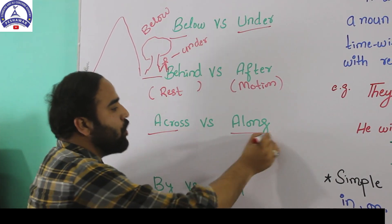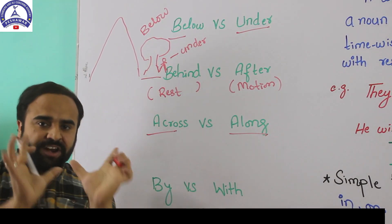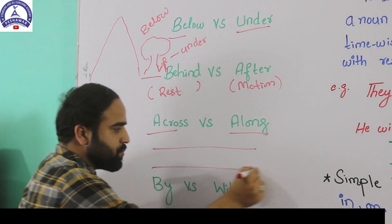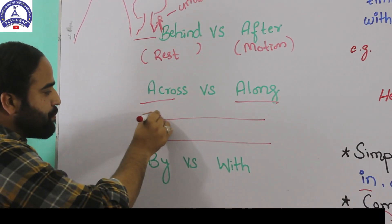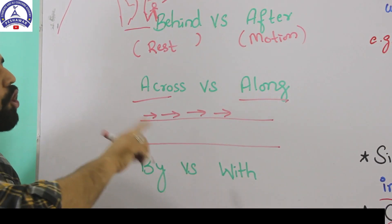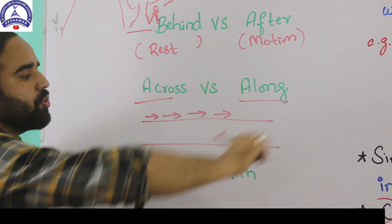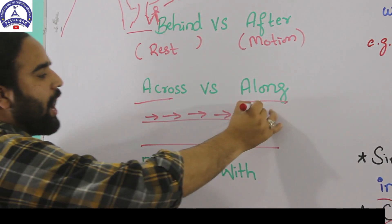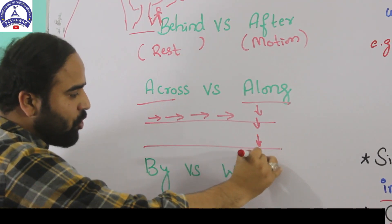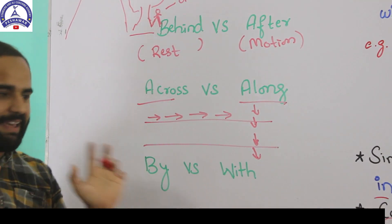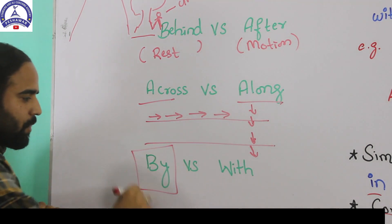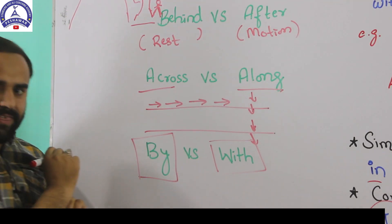Across versus along — very simple. If you are walking along the road, you walk in the same direction as the road. If you are walking across the road, you walk from one side to the other.